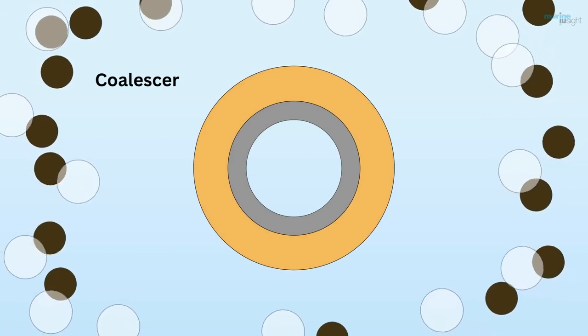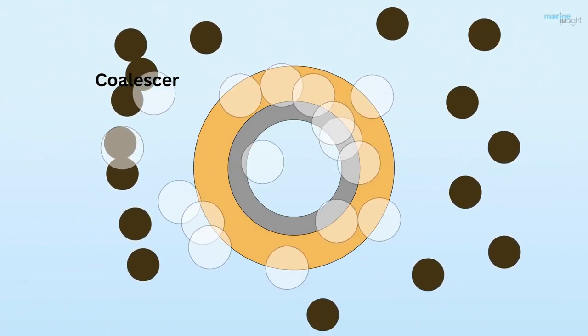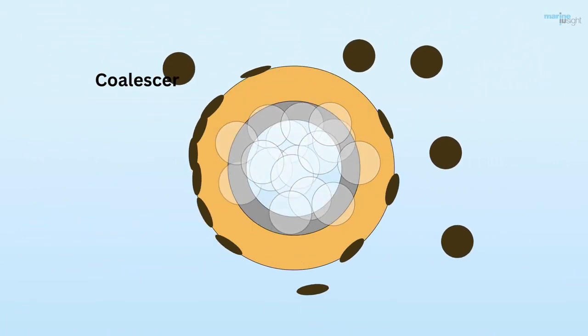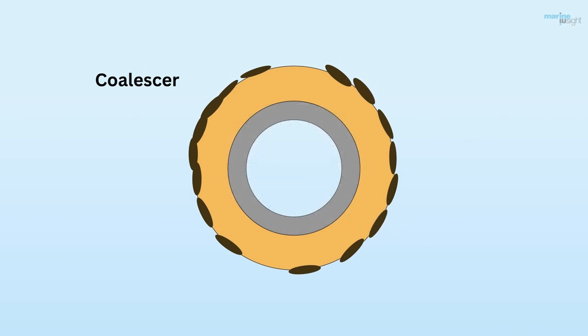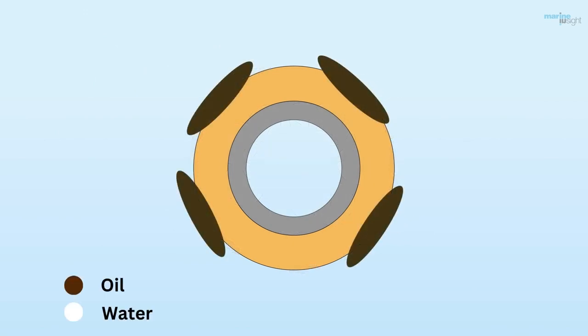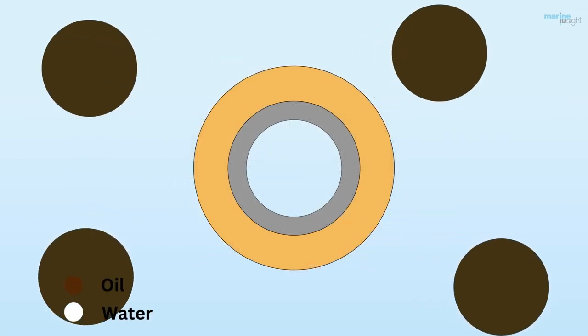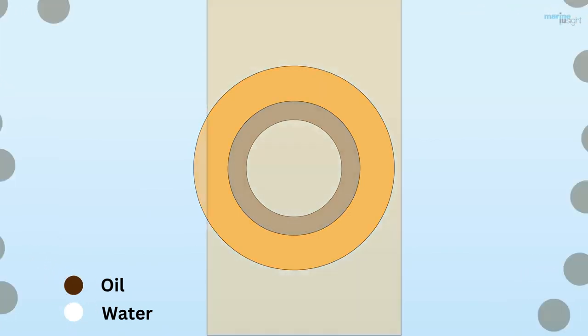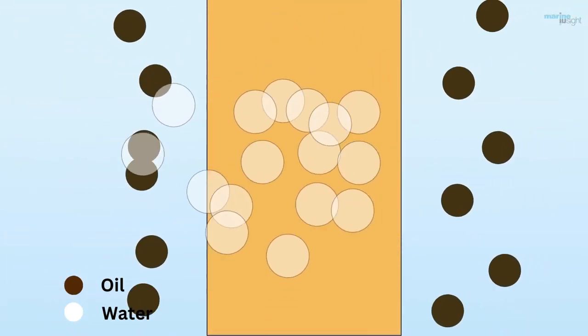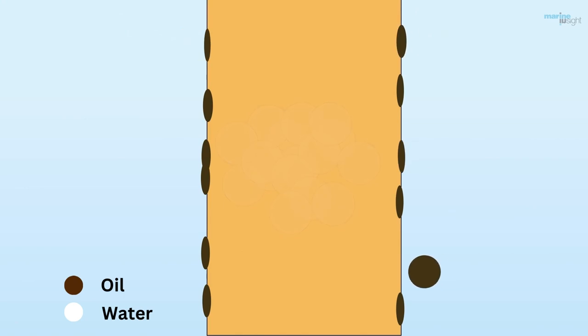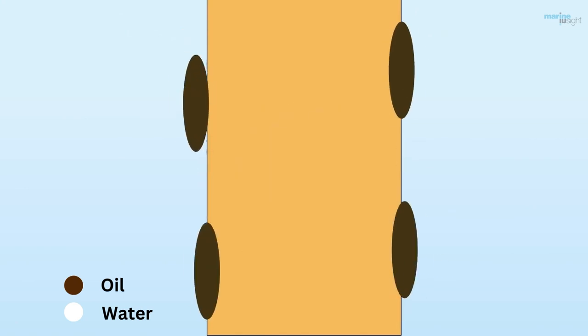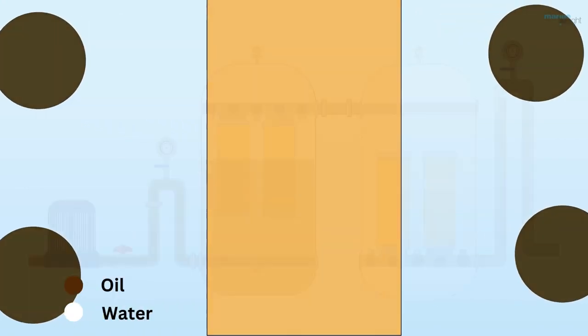This unit also consists of a coalescer stage and a collecting chamber. In these stages, the coalescer induces a coalescence process in which oil droplets are joined to increase their size by breaking down the surface tension between oil droplets in the mixture. These large oil molecules rise above the mixture in the collecting chamber and are removed when required.